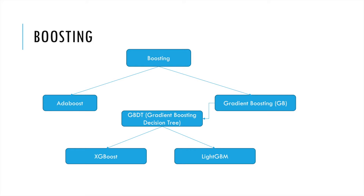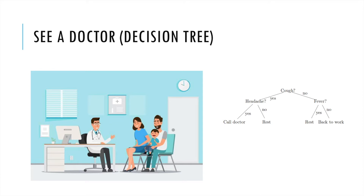Now let's use a story to understand what those algorithms are. We sometimes get sick so we go to see a doctor. The doctor will ask you: do you cough? Do you have a headache? Do you have a high fever? Using these symptoms, the doctor can decide if you just need rest or you need more tests to find out what problem you have. So we can see the doctor is just like a decision tree.